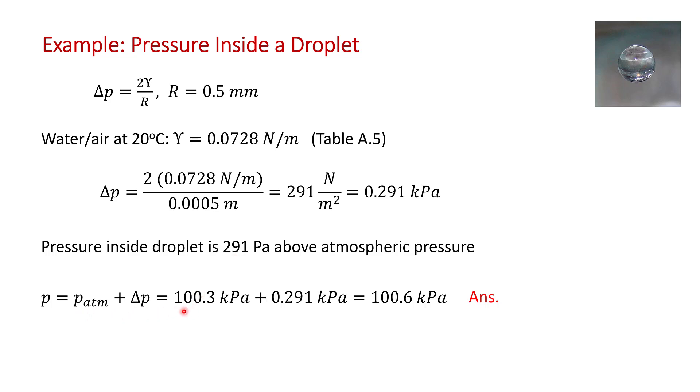The atmospheric pressure you're told in the problem statement is 100.3 kilopascals. You add on this 0.291 kilopascals, and I've done a little rounding here. So the answer is that the pressure inside the small droplet of water is 100.6 kilopascals.